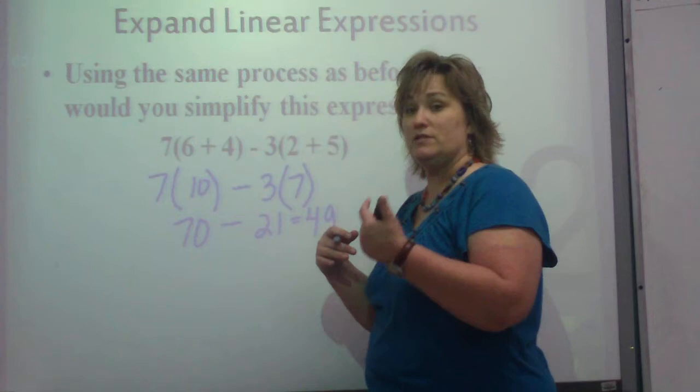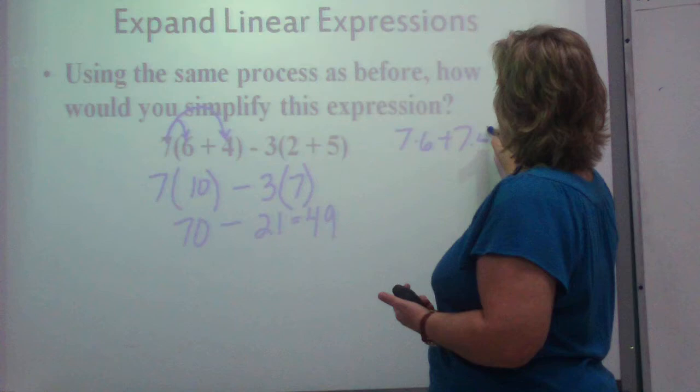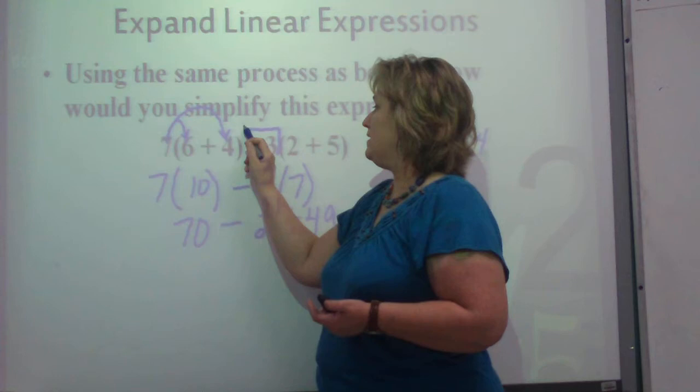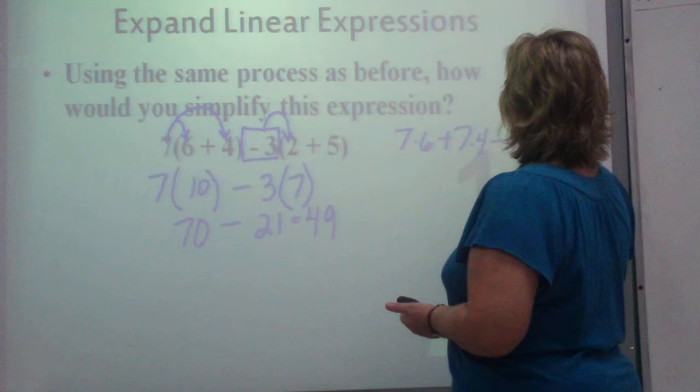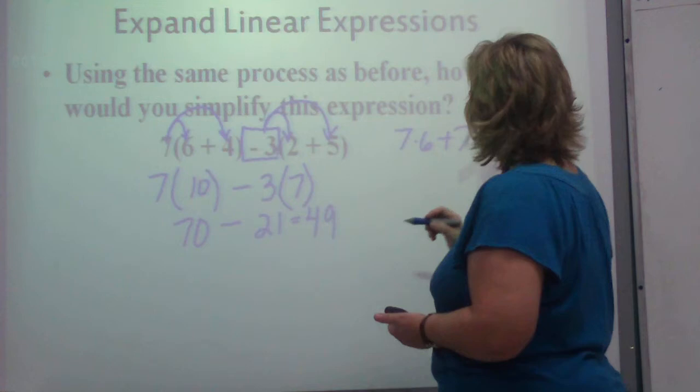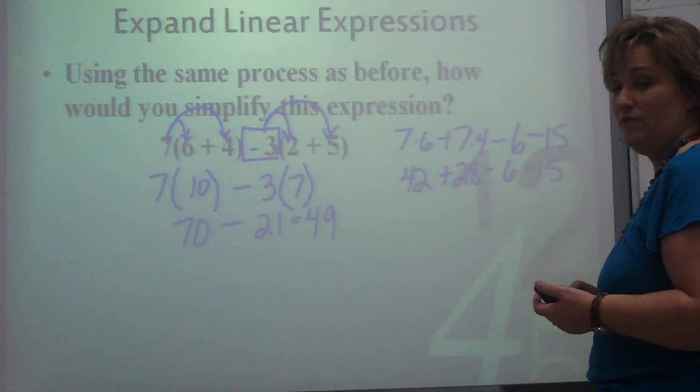A few slides later, we're going to get some variables in there where it's going to be a little bit different. You could also say 7 times 6 plus 7 times 4. Now, what you have to think about here is this is a 3, but remember how we talked about terms? That is a negative 3. So what is negative 3 times 2? It's negative 6. And what is negative 3 times 5? It's negative 15. So let's go ahead. This is 42 plus 28 minus 6 minus 15.